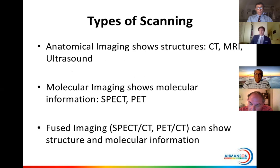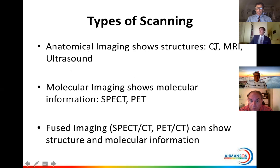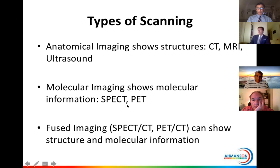How do we image prostate cancer? There are different types of scanning or imaging. We have what we call anatomical imaging, which shows structures. The most important modalities for this are CAT scanning or CT, MRI — which works with magnetic fields — and ultrasound, which works with sound waves. We in nuclear medicine use what is called molecular imaging.